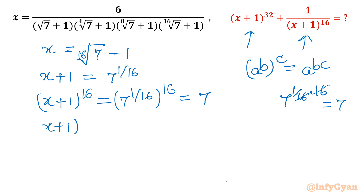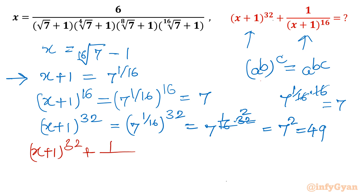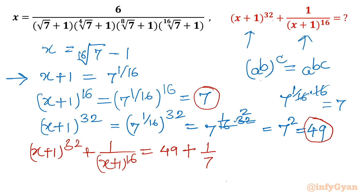For (x+1)^32, we raise both sides to the power 32: (x+1)^32 = (7^(1/16))^32 = 7^(32/16) = 7² = 49. Now putting the values into the expression: (x+1)^32 + 1/(x+1)^16 = 49 + 1/7. Taking LCM gives (343 + 1)/7 = 344/7. This is our final answer.